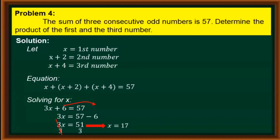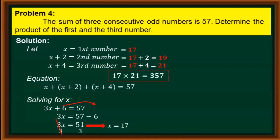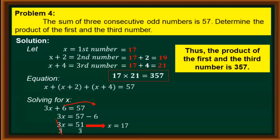Going back, our first number is x, so the first number is 17. The second odd number is 17 plus 2, which gives us 19. And the third number is 17 plus 4, which gives us 21. However, the problem asks for the product of the first and third number. So we multiply 17 and 21, and the product is 357. Thus, the product of the first and the third number is 357.